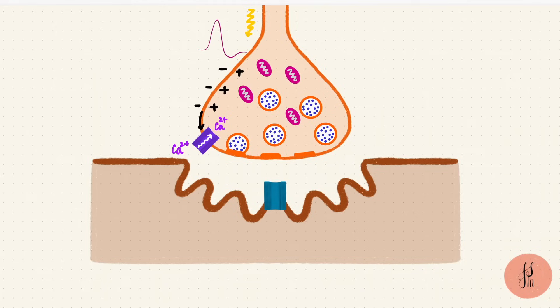They dock, prime, and fuse with the membrane to discharge their content, which would be acetylcholine, into the synaptic cleft.